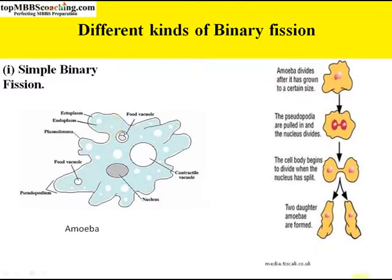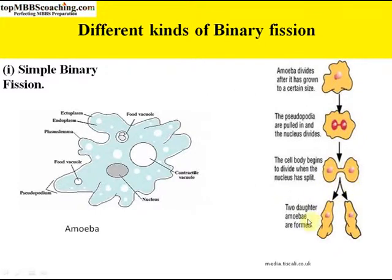Amoeba divides after it has grown to a certain size. The pseudopodia — the legs of amoeba — are pulled in, and the nucleus divides. The cell body begins to divide when the nucleus has split, and two daughter amoeba are formed. There is no certainty of the plane of cytoplasmic division; the cytoplasm breaks from anywhere. This is simple binary fission.